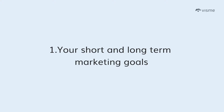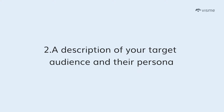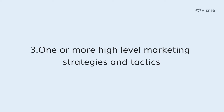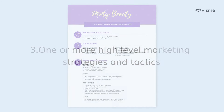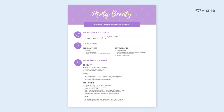In order to do this, every marketing plan should consist of the following: number one, your short and long-term marketing goals; number two, a description of your target audience and their persona; and number three, one or more high-level marketing strategies and tactics. This infographic template available on VisMe right now features each of these key details — it clarifies the objectives, the target audience, and strategies in an easily consumable page.